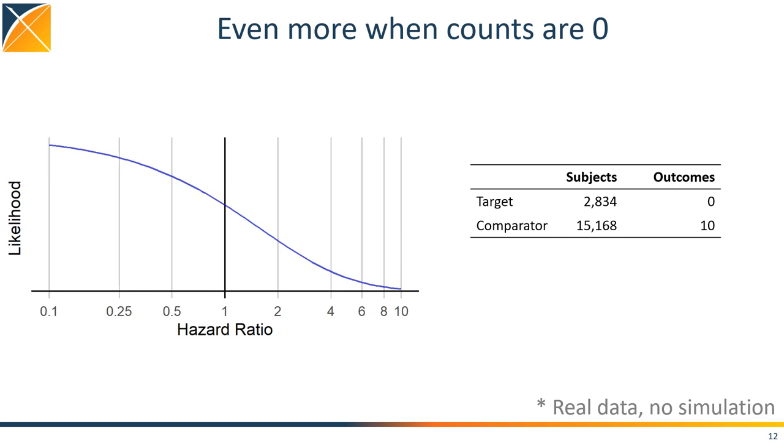And this problem can get much worse when there are zero counts. Again, in this example, we have lots of subjects, but there are zero events in one treatment arm. In this case, there is no point estimate, and no standard error that makes sense. But there is still information about the effect size.